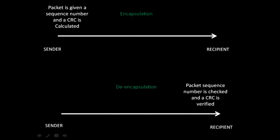In encapsulation, a packet is given a sequence number and a CRC is calculated on the sender before that packet is sent to the recipient. On the other side, the de-encapsulation process begins. The received packet's sequence number is checked and a CRC is verified against the same which was calculated on the sender. If they match, the packet is good. If they do not match, the packet is bad, and the recipient will send a request to the sender to resend that packet.